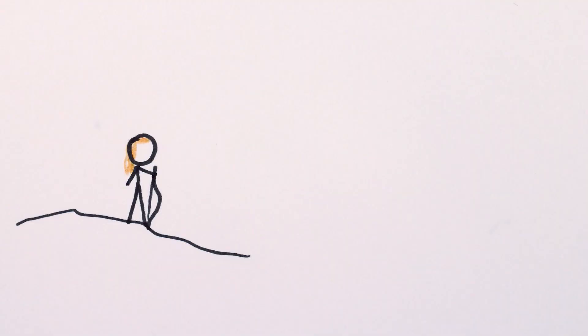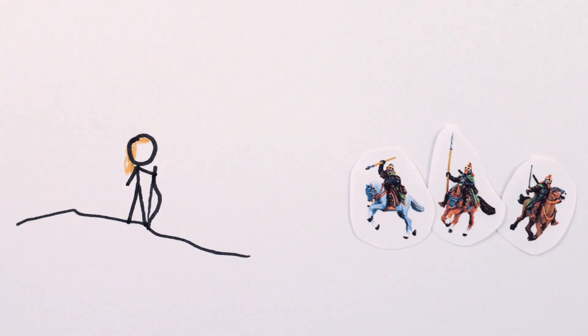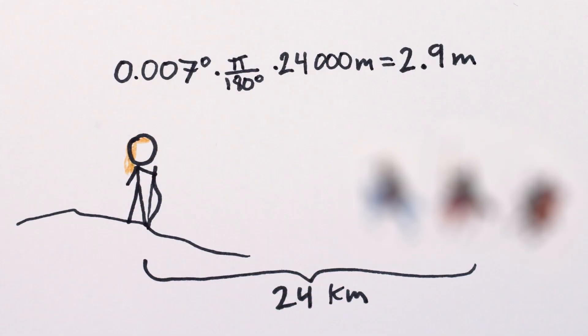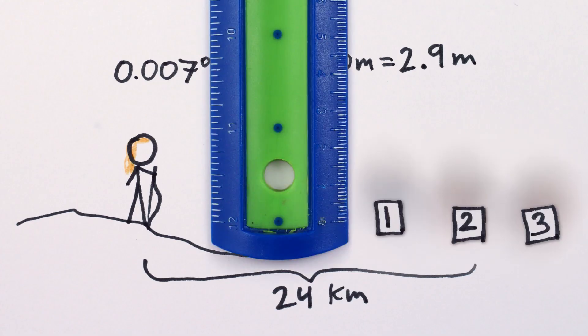So when Legolas, who has very human-sized pupils, looked at the riders of Rohan 24 kilometers away, diffraction tells us that everything smaller than three meters would have been blurred to about three meters in size. Perhaps he could still count the number of horsemen, but he definitely couldn't distinguish their heights to within a few centimeters.